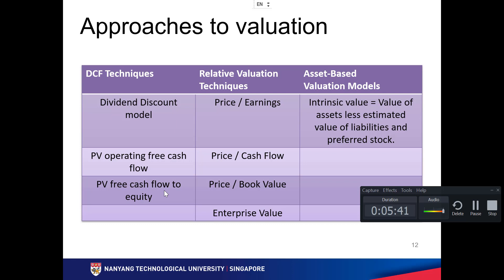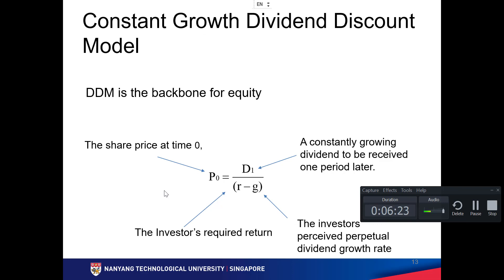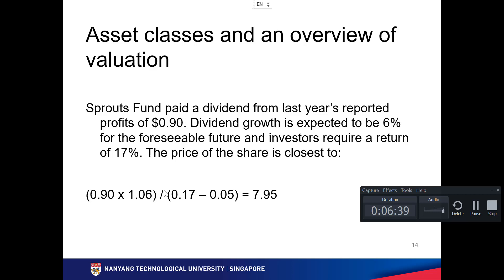Approaches to valuation: DCF — discounted cash flow — is the most popular model, using present value of free cash flow to equity. Comparable valuation is the second most popular, using metrics like P/B, P/CF, and enterprise value. Asset-based valuation is usually used for plantation, hotel, etc., where there are large tangible assets. The constant growth dividend discount model uses D divided by (r minus g), which is like a DCF for a stable company with constant dividends.